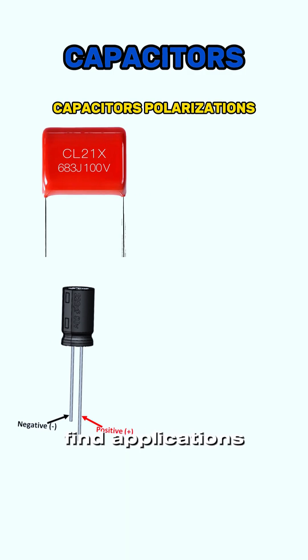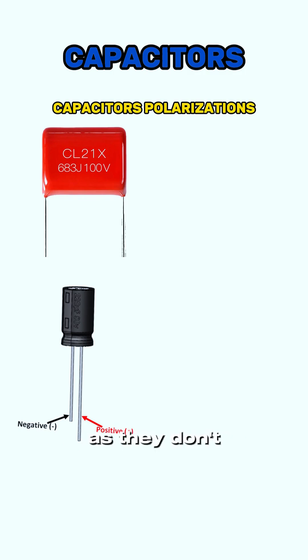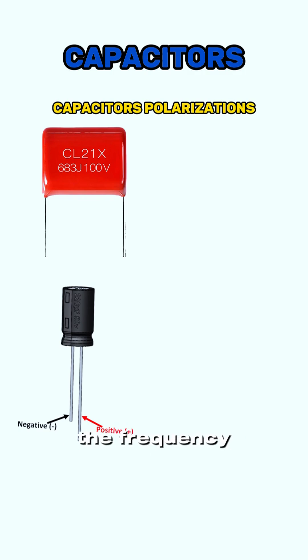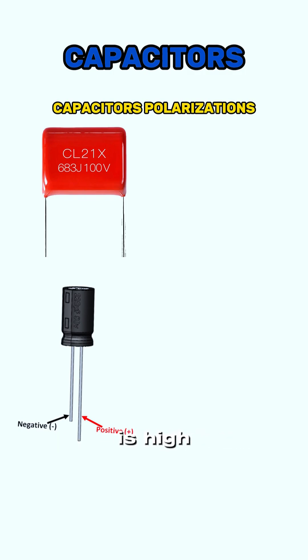Unpolarized capacitors also find applications in DC circuits, as they don't have positive or negative ends. The frequency of the unpolarized capacitor is high, and the leakage current is low.